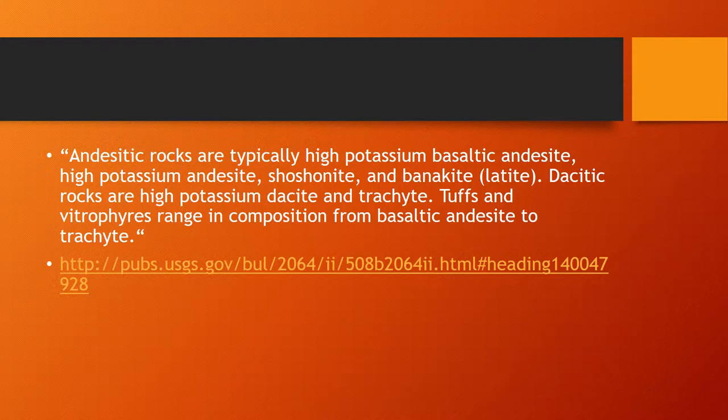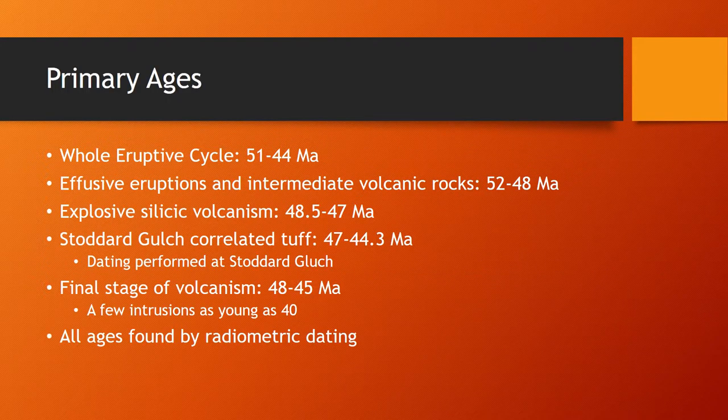Looking at the composition of the rocks at the Chalice Volcanic Group, we see it's mostly andesitic rocks — primarily hypopotassium basaltic andesite, hypopotassium andesite, shoshonite, banakite, and several others. The main takeaway is it's mostly andesite with a little bit of other things, but yeah, mostly andesite and dacite.